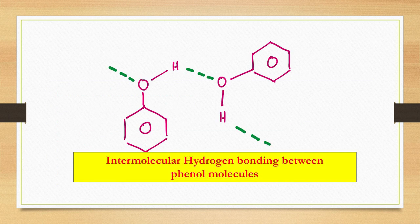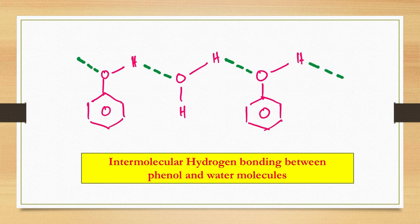This is the intermolecular hydrogen bonding between phenol molecules — hydrogen bonding between the molecules. This shows intermolecular hydrogen bonding between phenol and water molecules, which is why phenol is slightly soluble in water. These are the physical properties of phenol.